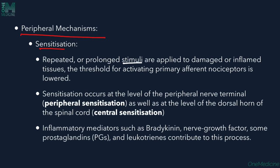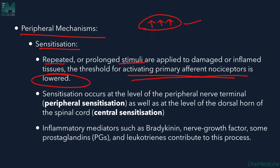Another peripheral mechanism is sensitization. When repeated or prolonged stimuli are applied to damaged or inflamed tissue, the threshold for activating the primary afferent nociceptor is lowered. This means stimulation of already damaged or inflamed tissue lowers the threshold, so even a small stimulus causes severe pain because the patient is already sensitized.